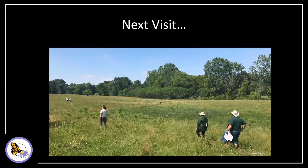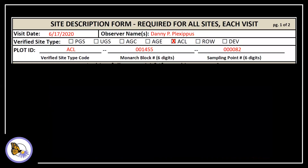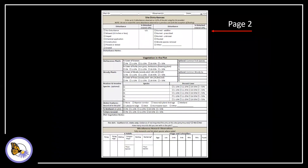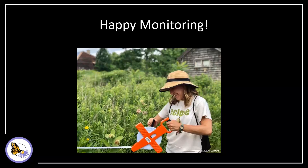That's it for the conservation management history. On your next visit, make sure to fill out the site description form — fill out the top of the first page and all of the second page. Congratulations on completing the site description online training. You can find all the training materials and data sheets at the website shown here, or may contact Monarch Joint Ventures staff with specific questions at the email address below. Thank you and happy monitoring.